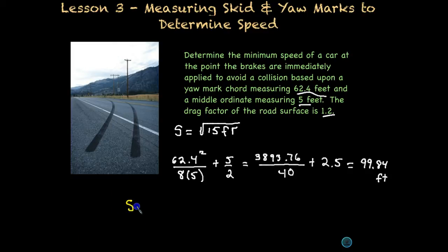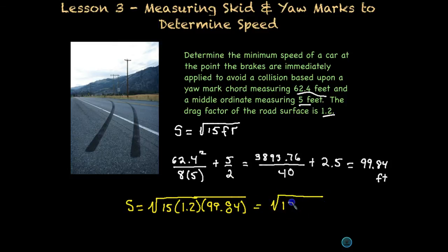Again, let's go ahead and stick that in our equation, so we have 15 times a drag factor of 1.2 times a radius of 99.84. If we multiply everything underneath the radical, we end up with 1797.19, and if we take the square root of that, we get 42.4 miles per hour.